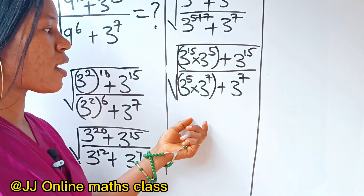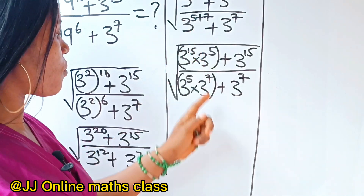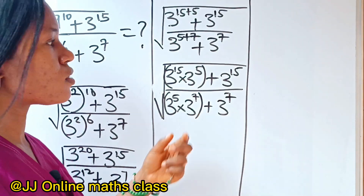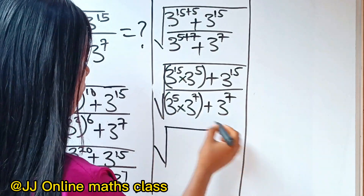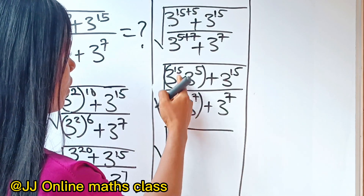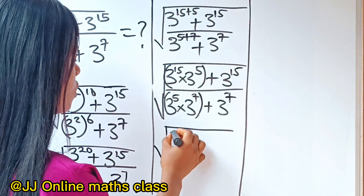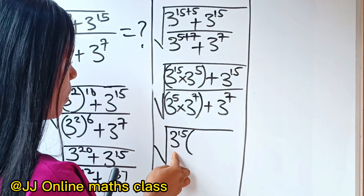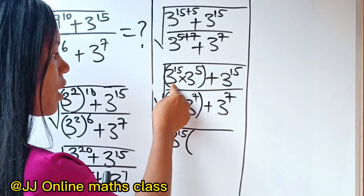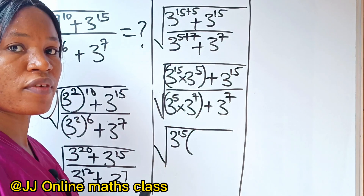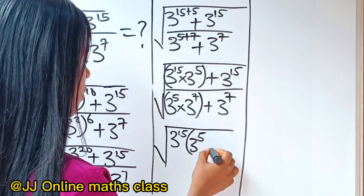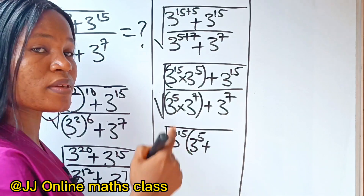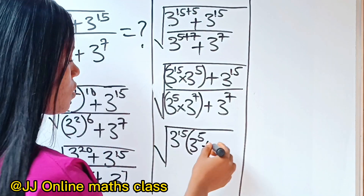We can factorize something out from the numerator. 3 to the power of 15 is common to both terms, so we bring it out. When we open the brackets and divide, this cancels with this, and we are left with 3 to the power of 5. Plus, when 3 to the power of 15 is divided by 3 to the power of 15, you have 1.